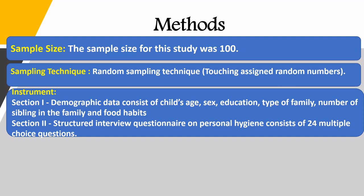The total sample size was 100, selected by random sampling technique in which lottery-assigned random numbers were used. The instrument has two sections. Section 1 includes demographic data consisting of child's age, sex, education, type of family, number of siblings, and food habits. Section 2 includes a structured interview questionnaire on personal hygiene consisting of 24 multiple choice questions.